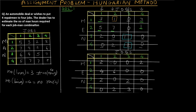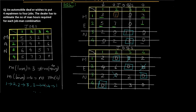We now perform zero assignment. For the first row, select one zero — this cancels that entire row and column. For the second row, select the next available zero. For the third row, the zero in the same column is already used, so we select the remaining one by default. For the last row, we select the final zero. The result: person 1 → job 2, person 2 → job 3, person 3 → job 4, person 4 → job 1.